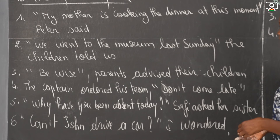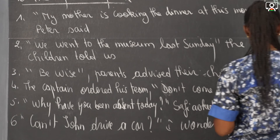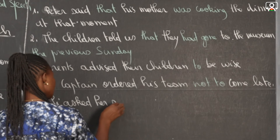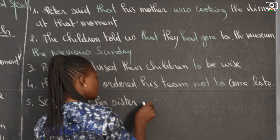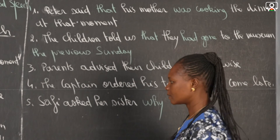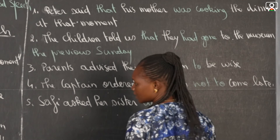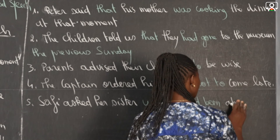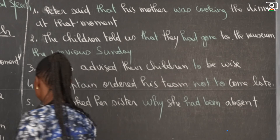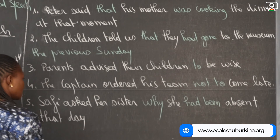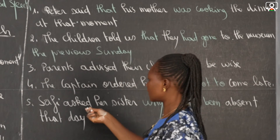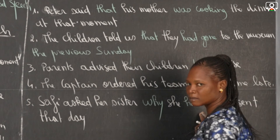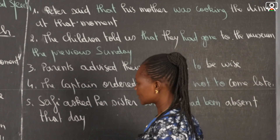Number five: 'Why have you been absent today?' Safi asked her sister — this is a WH question. You repeat the interrogative word, which is 'why': Safi asked her sister why she had been absent that day. Here we have the present perfect, and the verb in the reporting clause is in the past, so it changes to the past perfect. 'Today' becomes 'that day.'